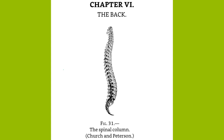They are 33 in all and are divided into groups according to the region in which they occur: 7 cervical in the neck, 12 dorsal or thoracic, 5 lumbar, 5 sacral, and 4 coccygeal.